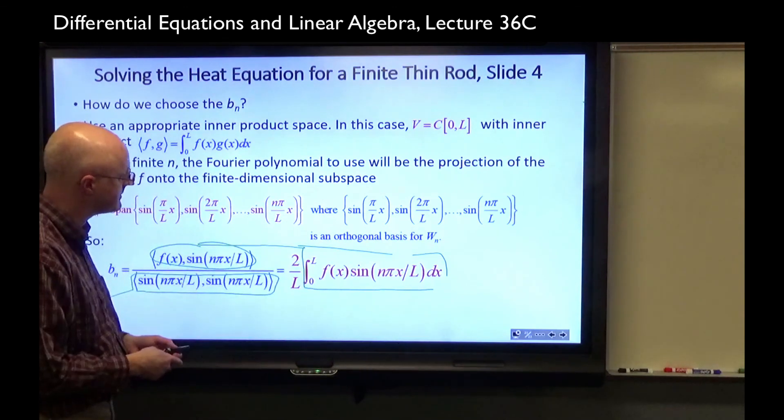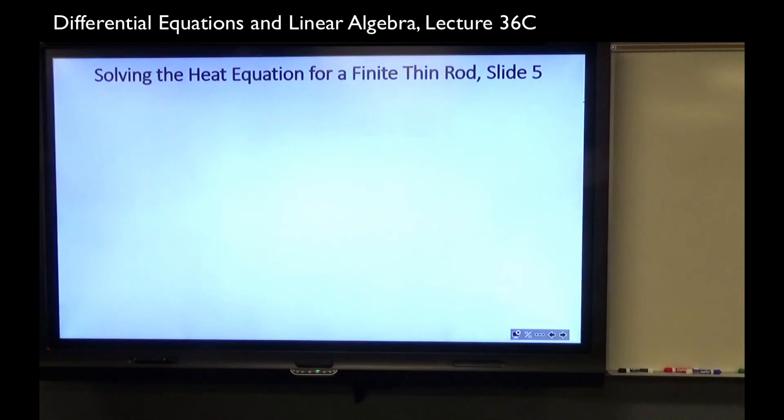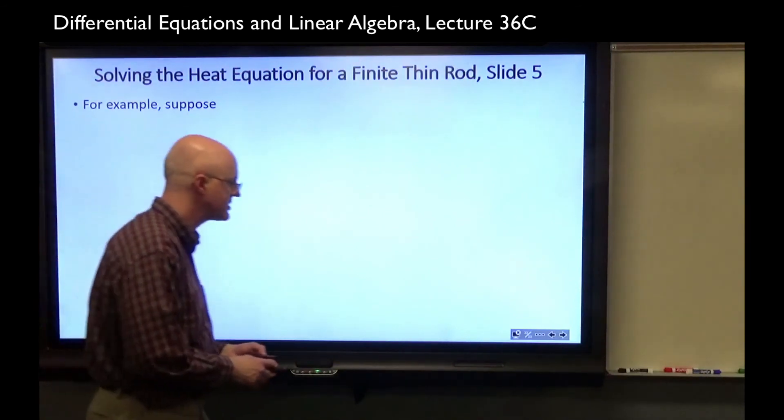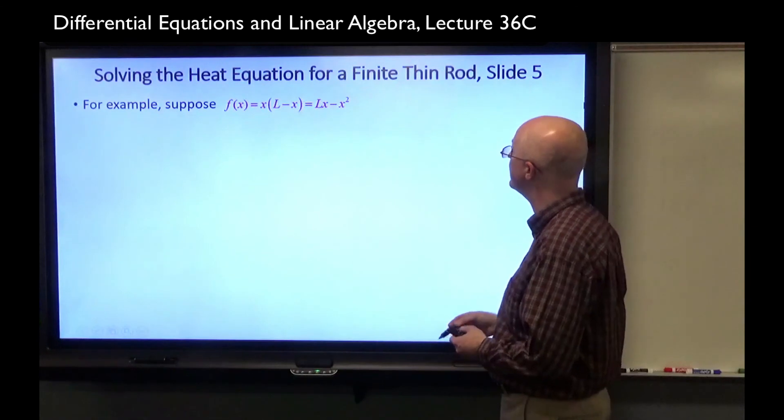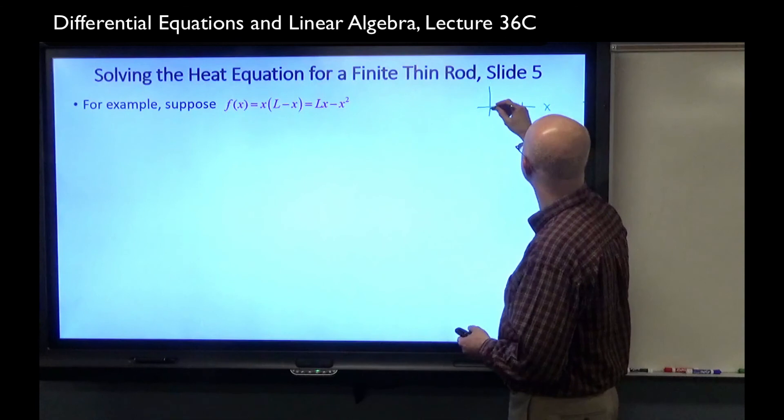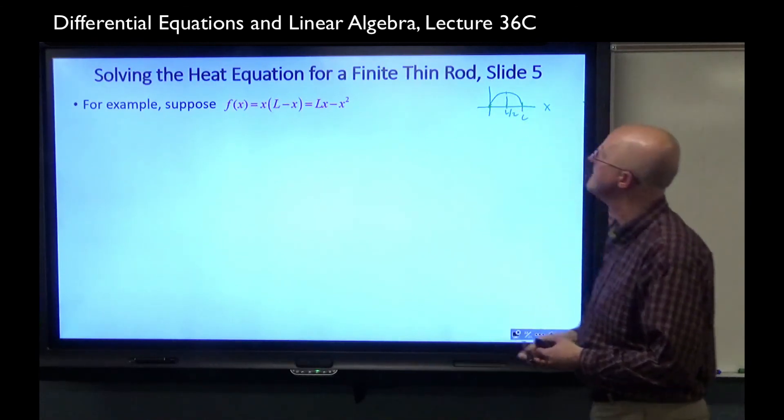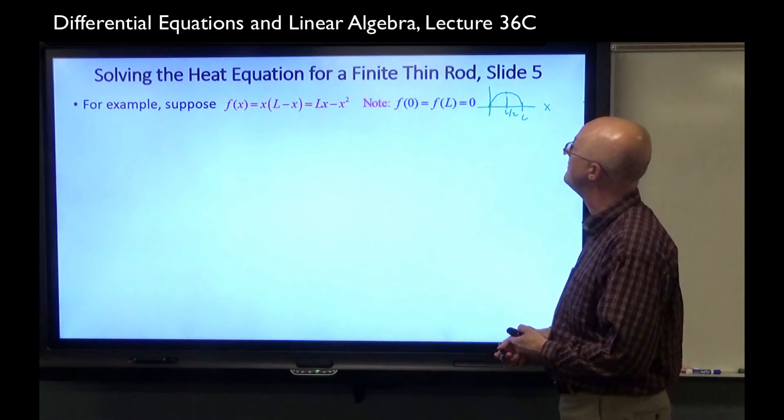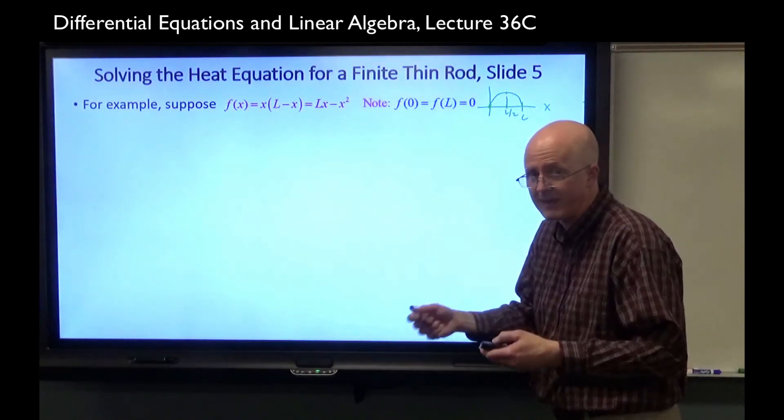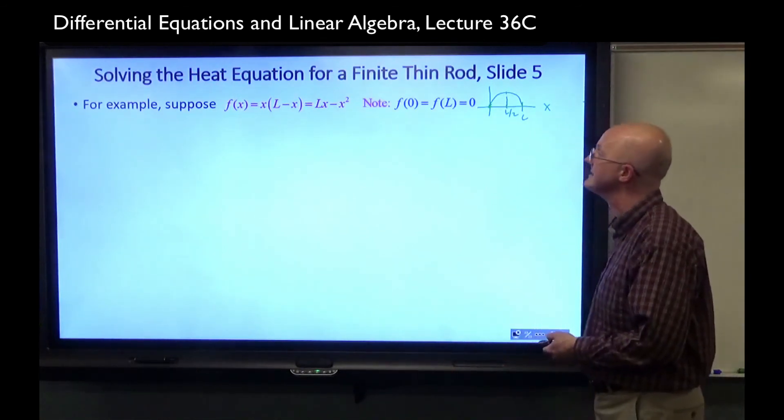For example, now we look at our example function, our initial heat distribution. Let f of x equal x times L minus x, which is Lx minus x squared. That's a function whose graph is an upside-down parabola with intercepts at zero and L and maximum at L over two. Note it's satisfied at the boundary conditions. f of zero equals f of L equals zero. That's what our setup was. That was the kind of PDE heat equation that we were solving. This is a simple example, simpler than some other examples.